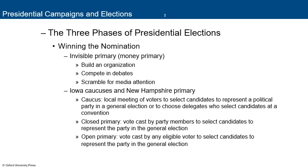There are three phases of a presidential election. First, you have to win the nomination. The invisible primary involves raising money, building your organization, competing in debates, getting recognized, and scrambling for media attention — for example, Donald Trump going down the escalator in 2015, or Joe Biden announcing he must run because he disagreed with Trump's policies.